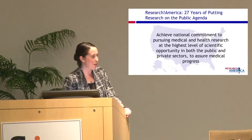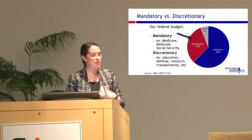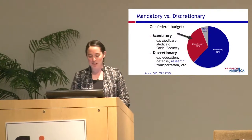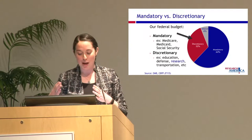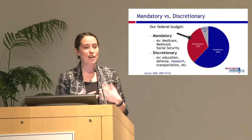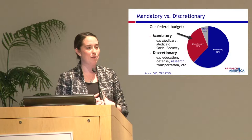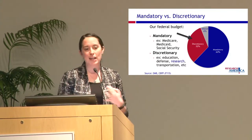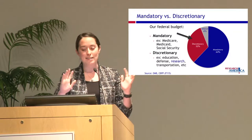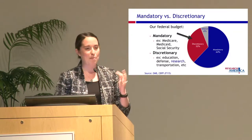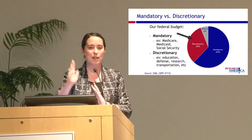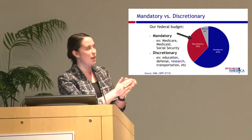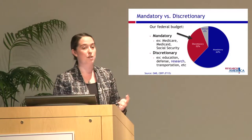When we're talking about the appropriations process, we have to take a step back and look at the federal budget. That big blue section — about two-thirds of the federal budget — is mandatory funding, also think of it as automatic. That's Medicare, Medicaid, Social Security payments. Congress is not touching those on a regular basis. So we're actually only looking at one-third of the federal budget, the red section, also known as discretionary funding.